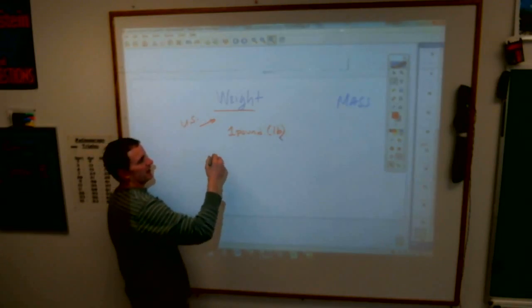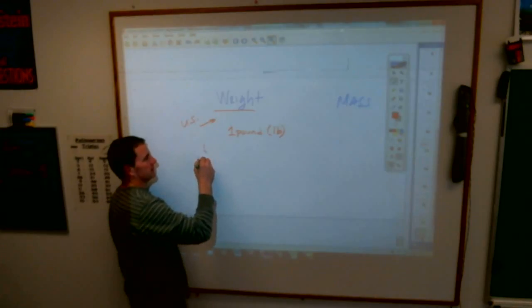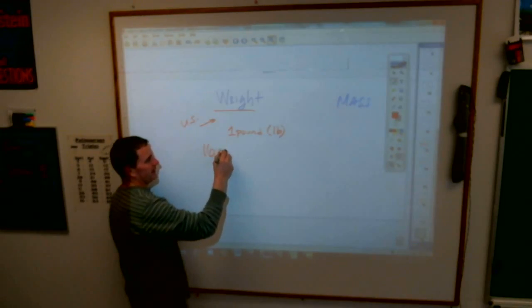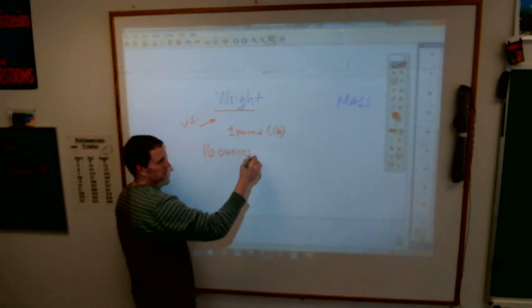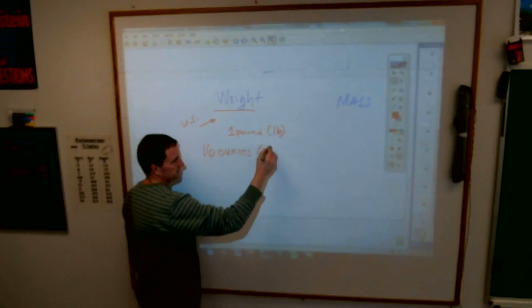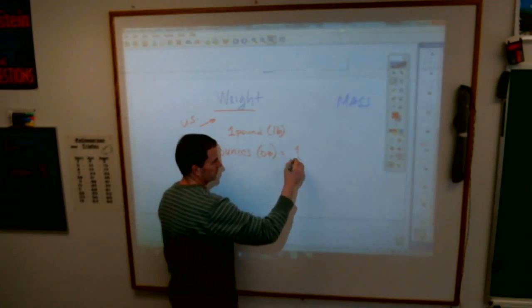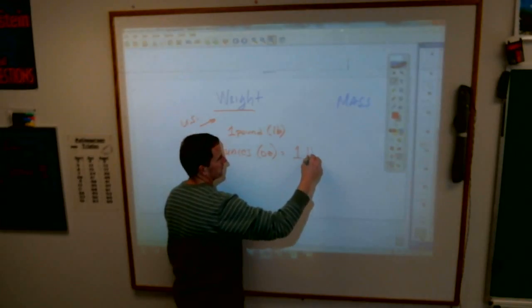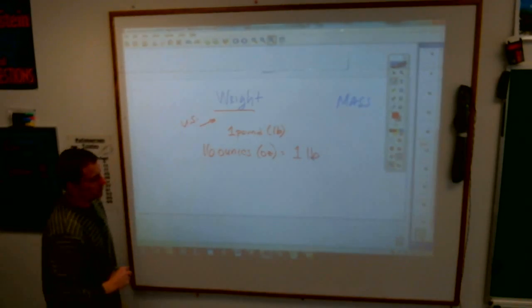I think you're getting at this. We also have one ounce. 16 ounces, which is abbreviated O-Z, equals one pound. 16 ounces equal to a pound.